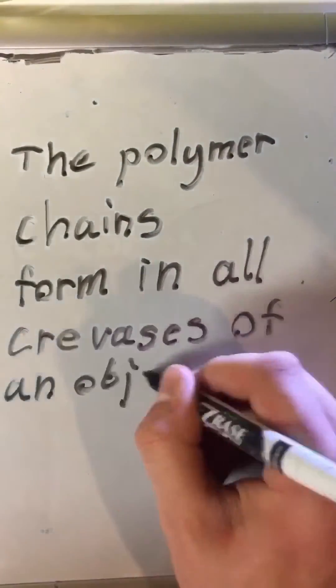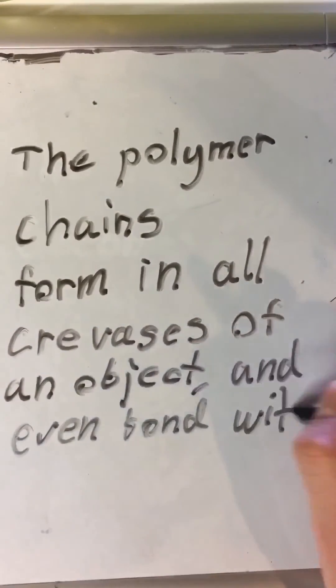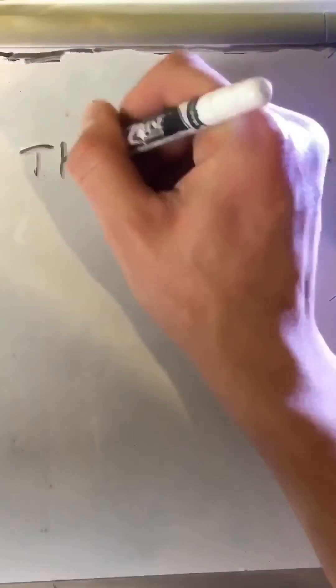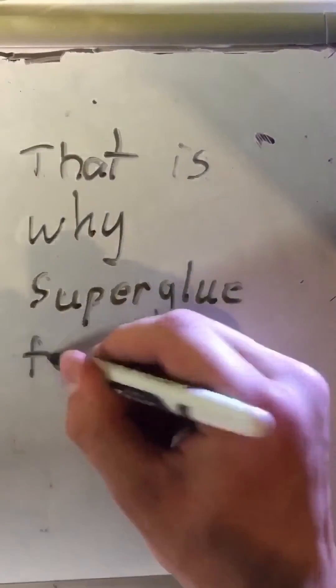The polymer chains of the solid form in all the microscopic crevices of an object and can even bond with the object. And that is how super glue forms such a very powerful bond.